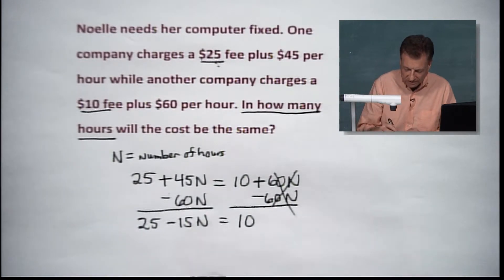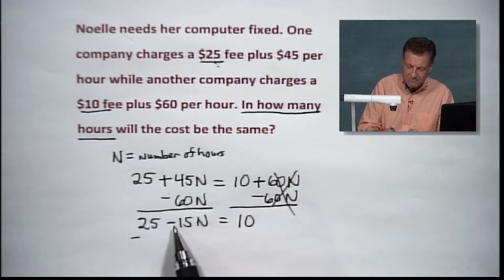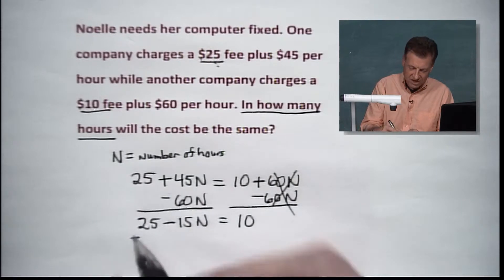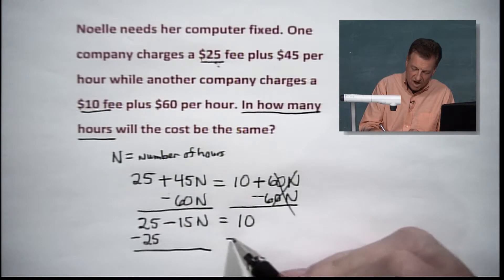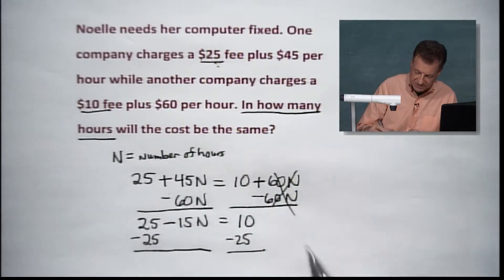Now, where are we going? We're going to get rid of this 25. Now, I want everybody to be careful. That 25 is positive. There is a minus on the 15 behind, yes there is, but that has nothing to do with 25. We're going to get rid of 25. So we're going to subtract from both sides.